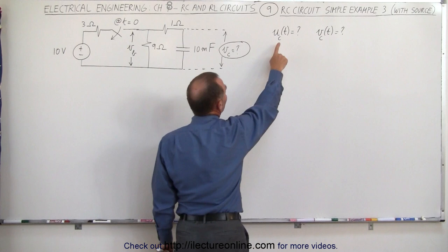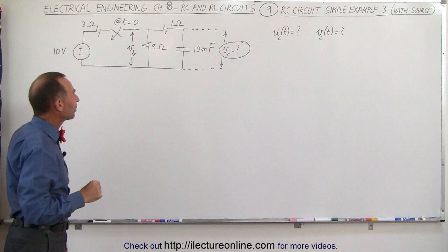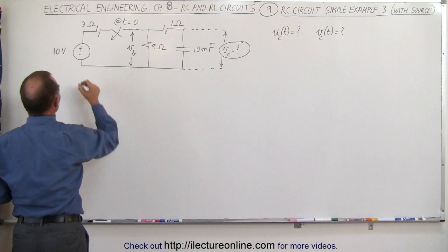We are supposed to find the voltage across the capacitor as a function of time, and the energy on the capacitor as a function of time. Before we open the switch at time equals zero, we're going to find out what energy is stored in the capacitor, and we need to find the voltage across here, which means we're going to deal with the circuit as it is.